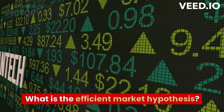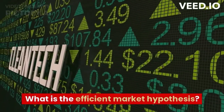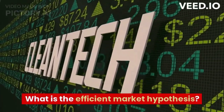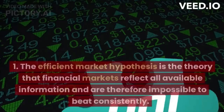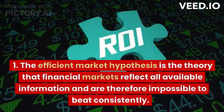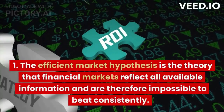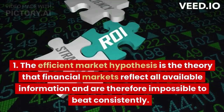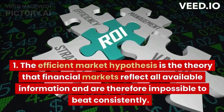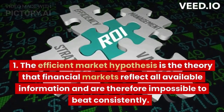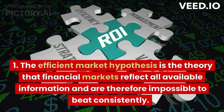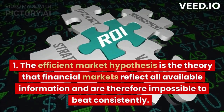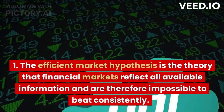What is the Efficient Market Hypothesis? The Efficient Market Hypothesis is the theory that financial markets reflect all available information and are therefore impossible to beat consistently.